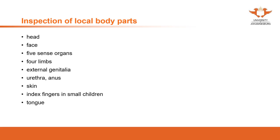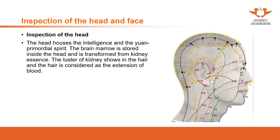In this session, we are going to talk about the inspection of the head, face, five sense organs, four extremities, internal genitalia, urethra and anus, skin, index fingers in children under the age of three, and as well as the tongue — because the information there is going to use a separate chapter for tongue diagnosis. The first thing is the head.